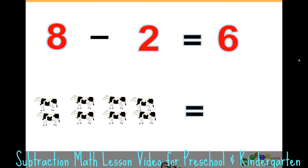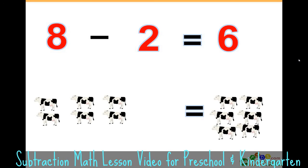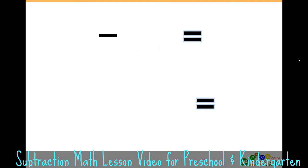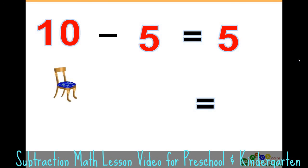10 minus 5 equals 5. We have 10 chairs, and if we take away five of those chairs, we only have five chairs left.